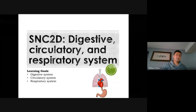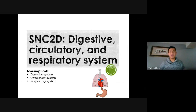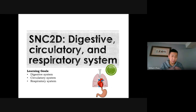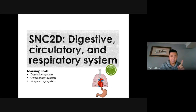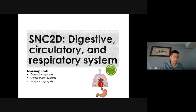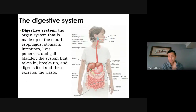For this class we're going to talk about three organ systems: the digestive, the circulatory, and the respiratory. In the lesson afterward we're going to look at the other systems. We're going to first talk about the digestive system, then the circulatory system, and then the respiratory system. All of these systems are going to be pretty important if you decide to take grade 11 biology because they'll come back.